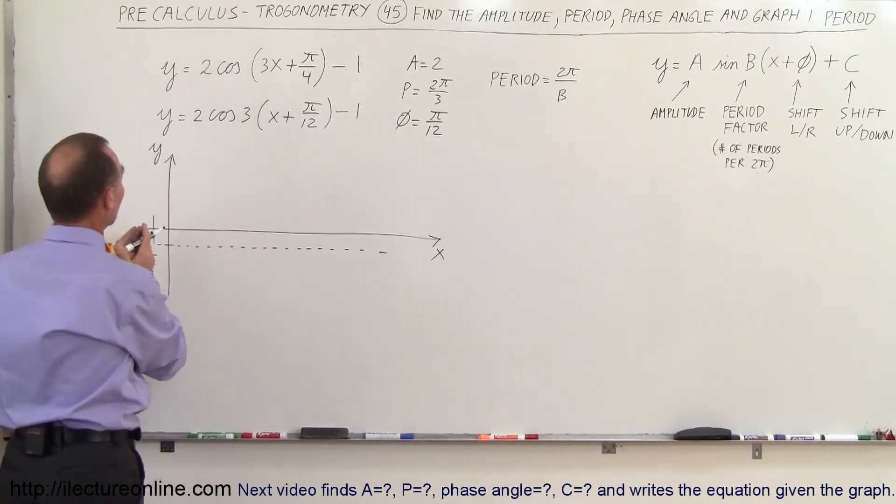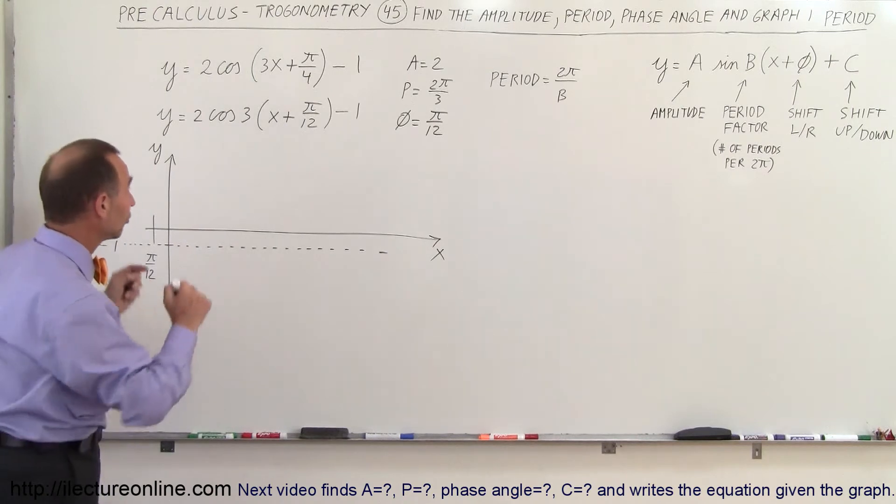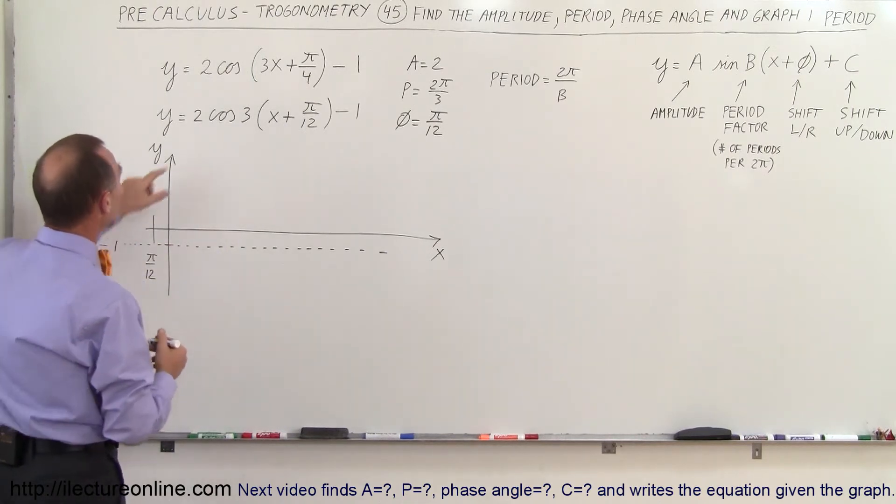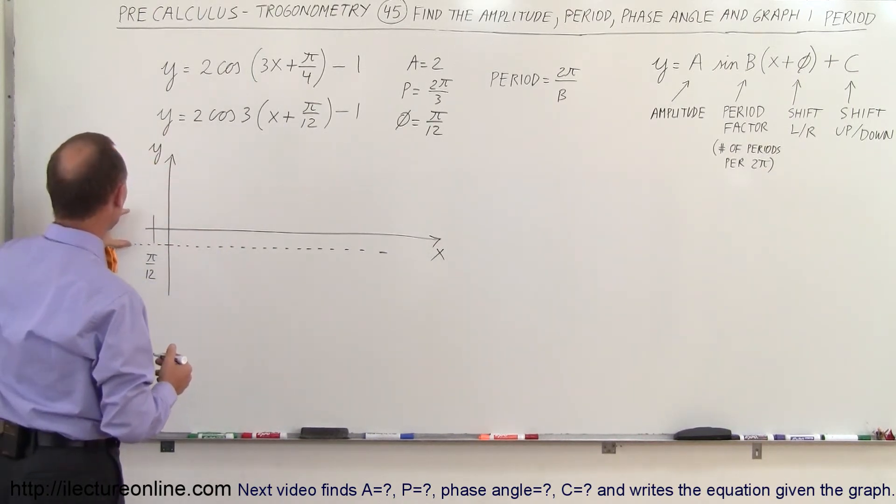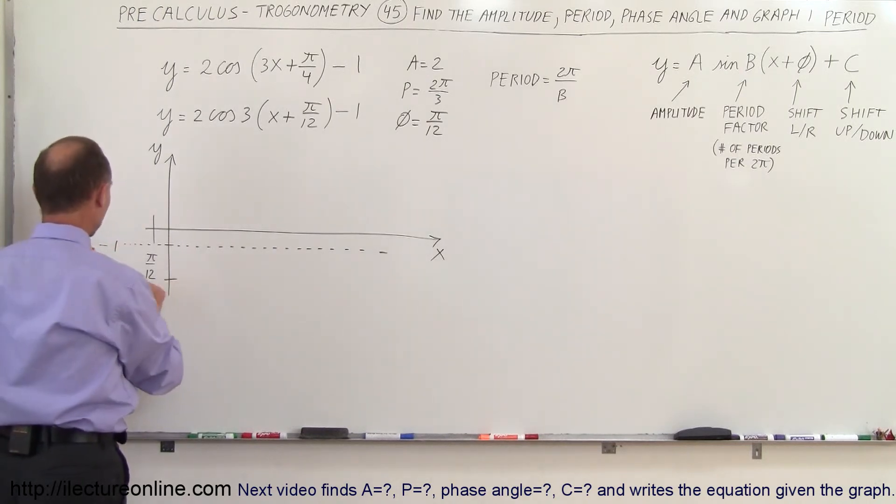Okay so the function is going to start from that. It's a cosine function so it starts at the maximum amplitude since the amplitude is 2. It'll start 2 above this line and go down to 2 below this line so we'll go to minus 3.